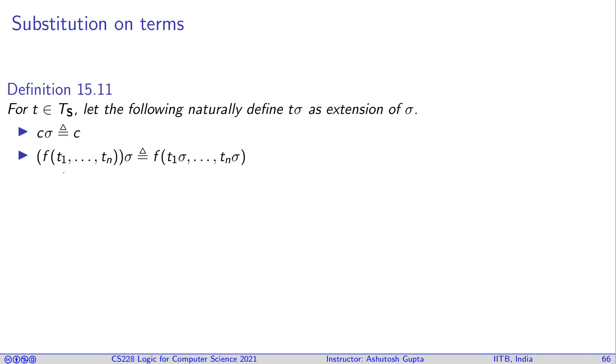For t element of Ts, let the following naturally define the substitution t sigma. c sigma is just c, you can't replace any constant. And f(t1 to tn) gets replaced by another term. How do you get it? You basically apply the substitution on subterms, and then build the formula. This is simple idea, recursive definition of substitution.